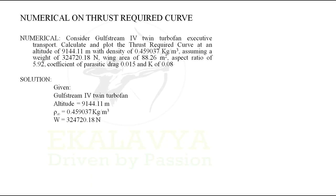Weight of the aircraft can be denoted as W, here W = 324720.18 N. Wing area can be denoted as S, here S = 88.26 m². Aspect ratio can be denoted as AR, here AR = 5.92. Coefficient of parasitic drag is denoted as CD0, here CD0 = 0.015, and k value = 0.08.